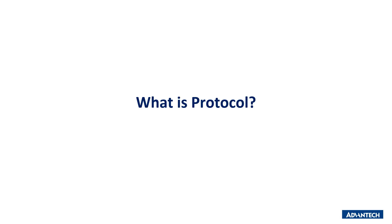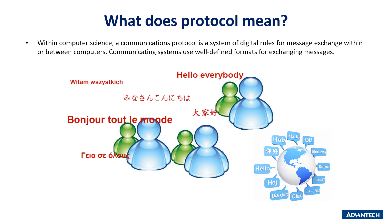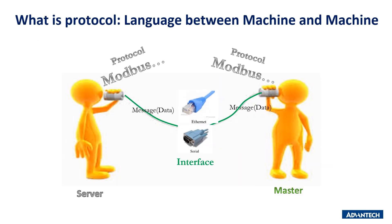What is a protocol? When people talk with each other, we use language. Language is generated by human beings to transfer knowledge or experience from one person to another. Some people use Chinese, Japanese, English, French, or Spanish. However, machines also need to talk with each other in order to transfer data. The word 'protocol' is used instead of 'language' to describe when machines are communicating.